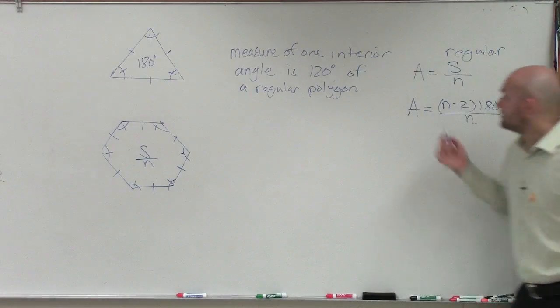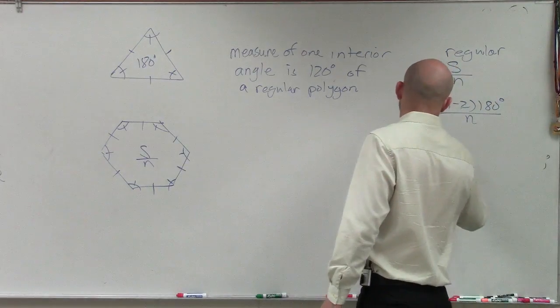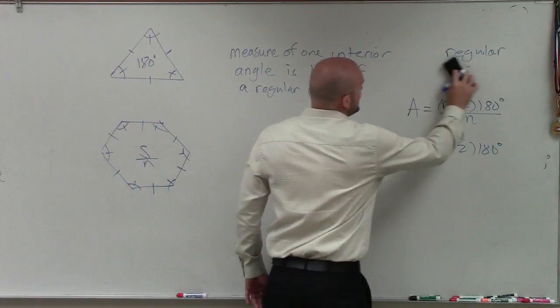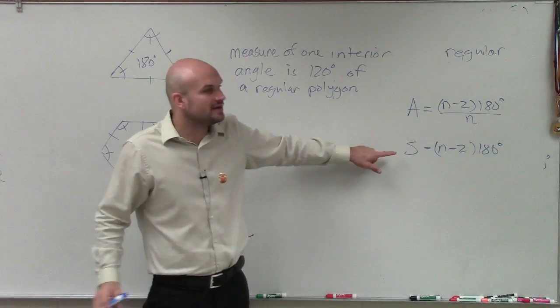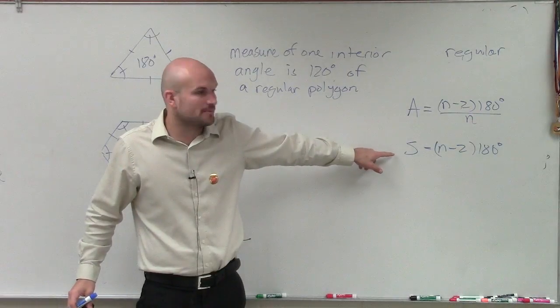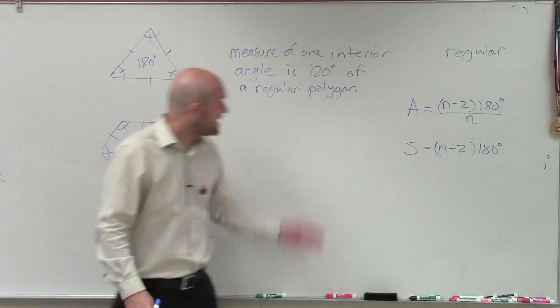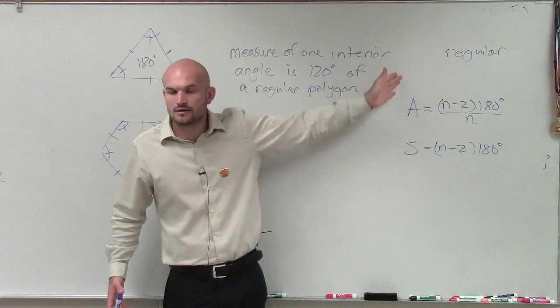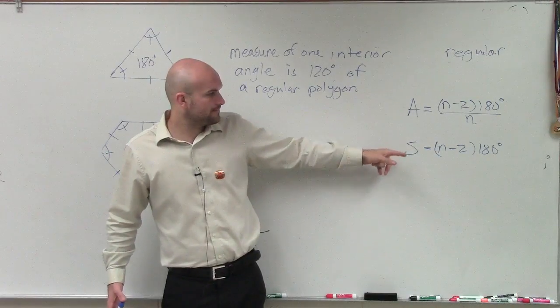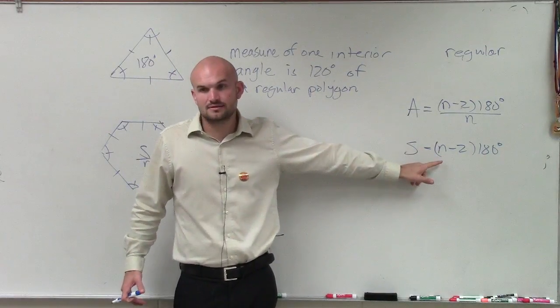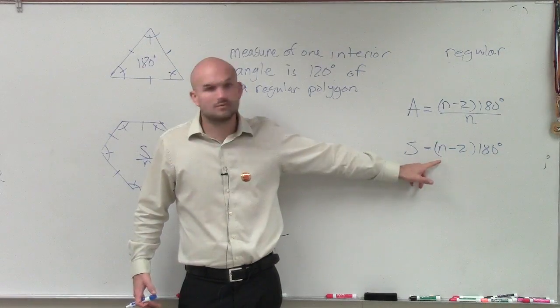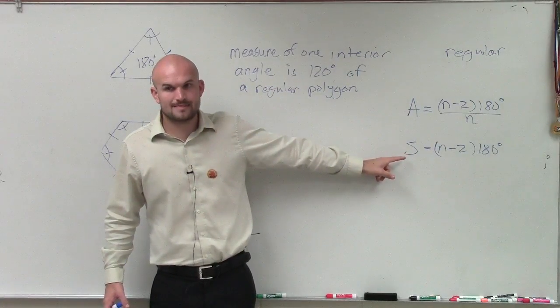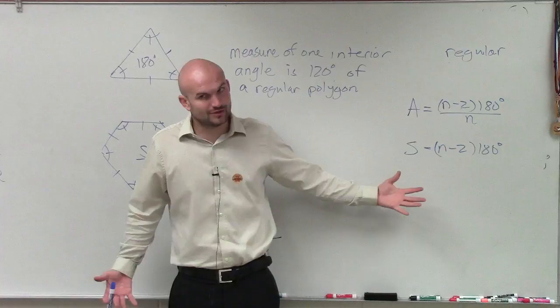So there's two formulas we talked about. We have the formula for the measure of one interior angle, and we have a formula for the sum of all the interior angles. So if I just have one interior angle, which formula do you think I would want to use, Lauren? Do we know what n is? It's the number of sides. Right, but so far in this information, do we know what n is? Do we know what the s is, the sum? So right now, we have the two variables. We don't know either of them.